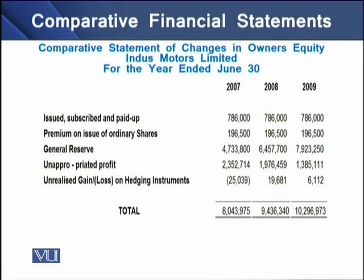There is also a summary of the statement of changes in owners' equity, which is the fourth major financial statement. You can check the changes in paid-up capital from 2007 to 2009 — here it is the same, meaning the company had not issued any additional capital over this period. You can check the premium on issue of shares, changes in general reserves, unappropriated profits, and other items of equity. Finally, you can check how much change happens in the total equity section of the company from 2007 to 2009.